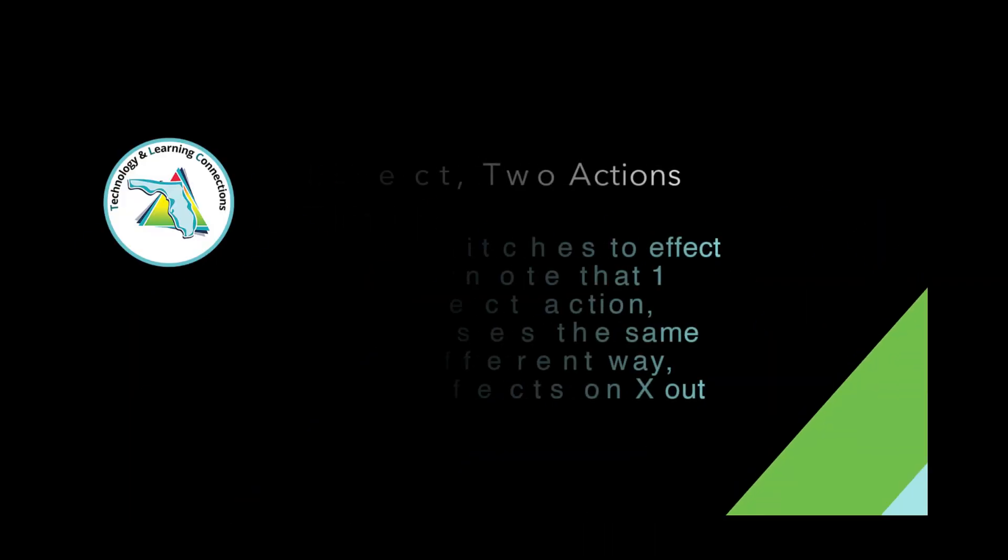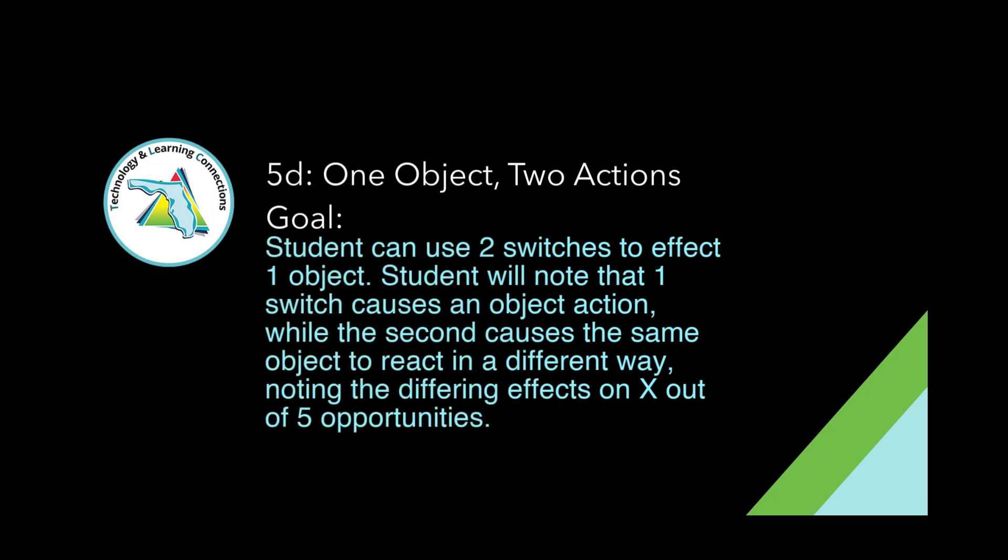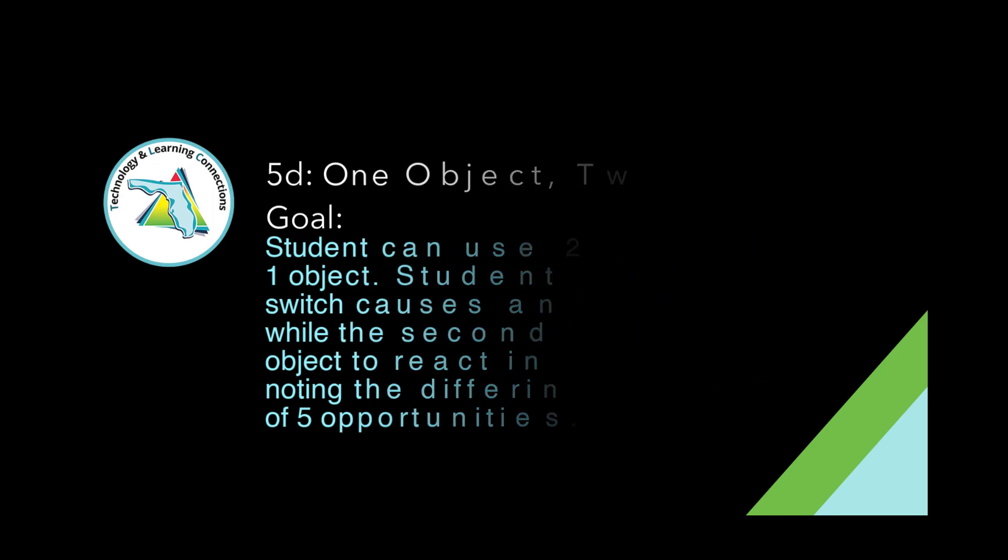An example of a goal for Level 5D, One Object, Two Actions, might sound something like: the student can use two switches to affect one object. The student will note that one switch causes an object action while the second switch causes the same object to react in a different way, noting the differing effects on x out of five opportunities.